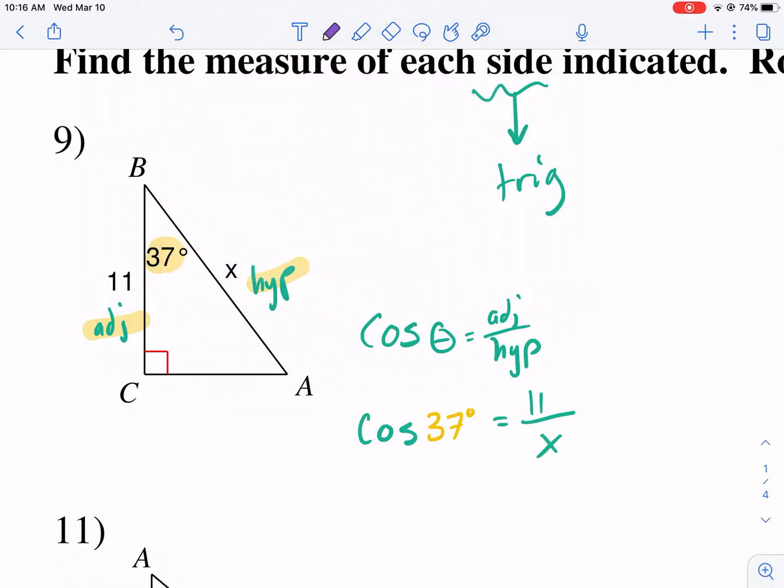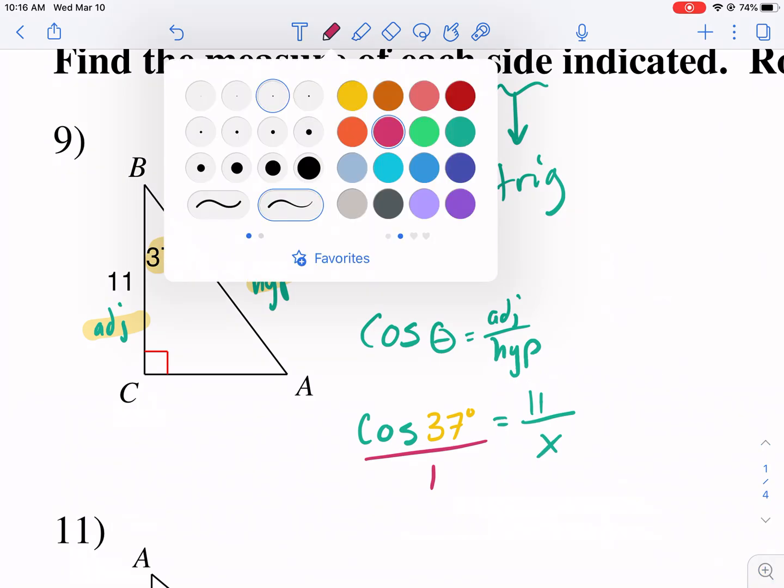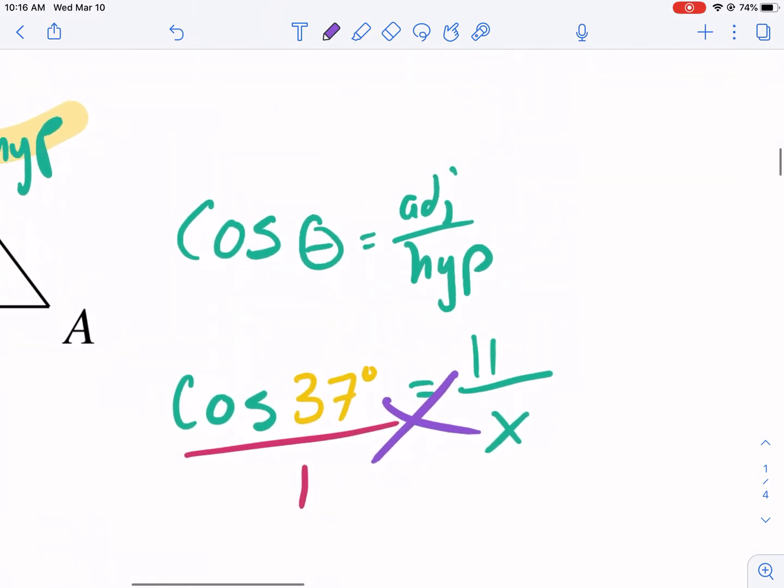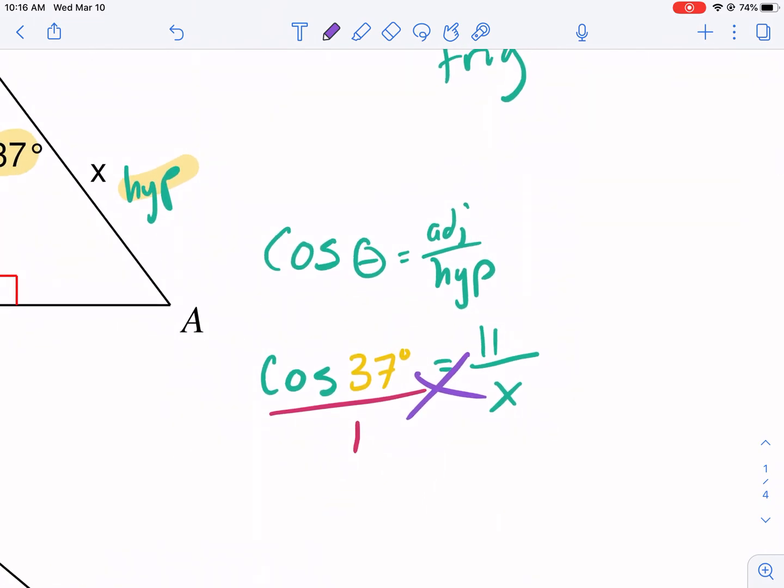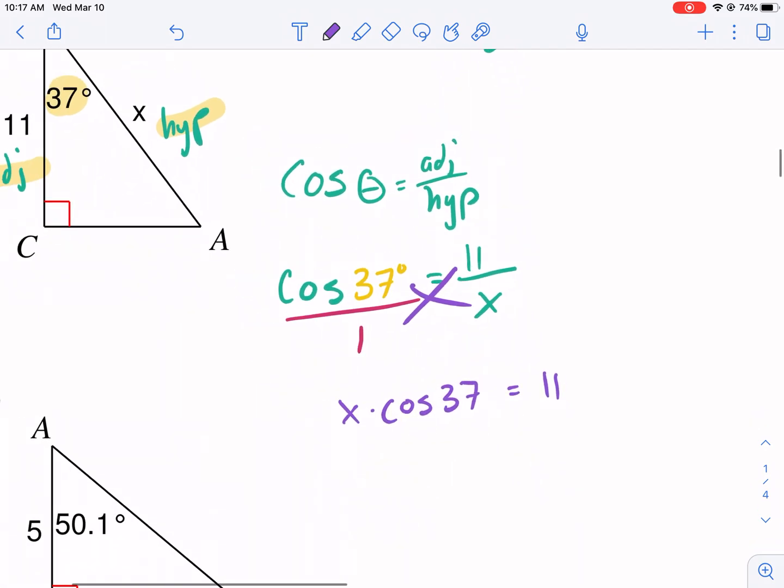What I like to do here is I always like to put both sides over one, so I have a fraction on the left and a fraction on the right. Why do I like that? Because now I can cross multiply. It makes it easy when you have an X in the denominator. A lot of my students struggle when there's an X in the denominator, so I just tell them, put it over one, cross multiply. So I have X times cosine of 37 equals 11. I divide by cosine 37.